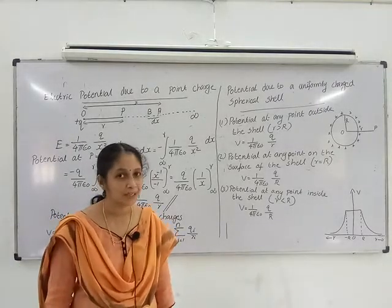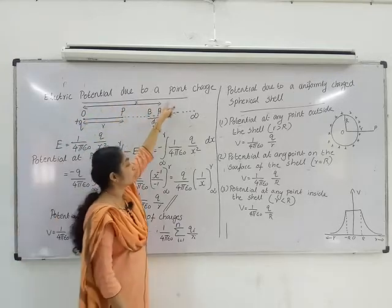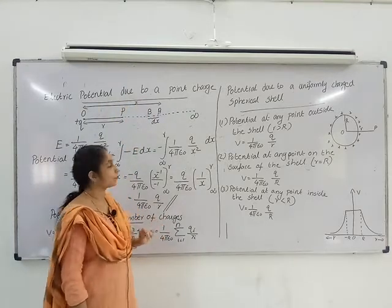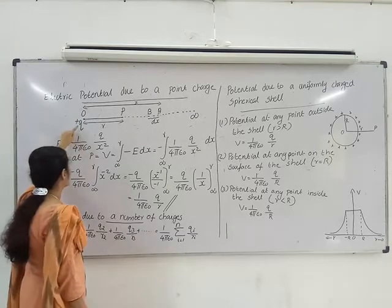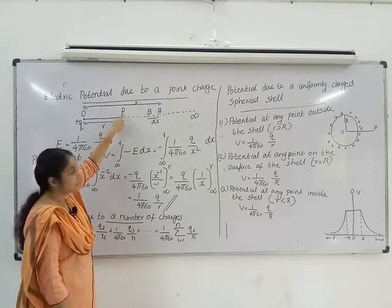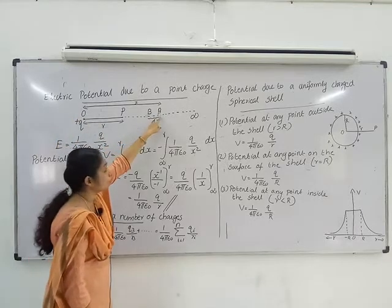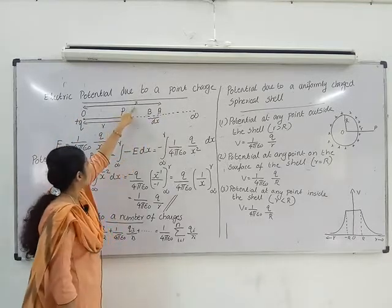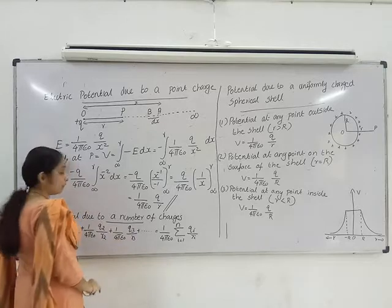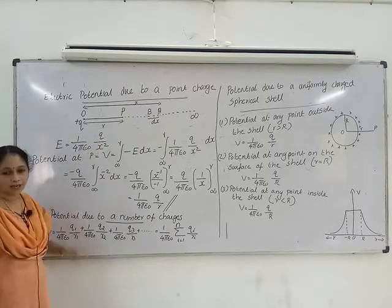Hi students. In the name of the electric potential due to a point charge, consider a point charge Q situated at O. Let P be a point at a distance R from O, and A be a point at a distance X from O, where electric intensity is given by E equal to 1 by 4 pi epsilon 0 into Q by X square.